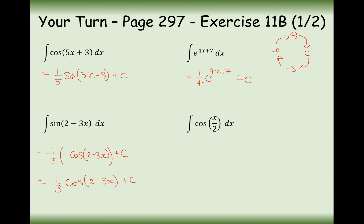For the last part, cos integrates round to sine, and we're going to be dividing by the half inside the brackets. When you divide by a half, you actually multiply by 2. So that's what we get there.